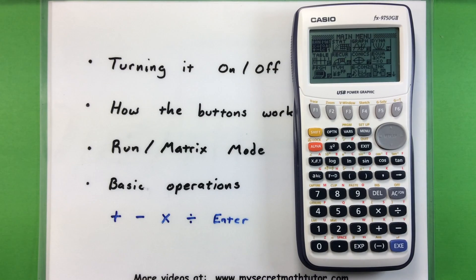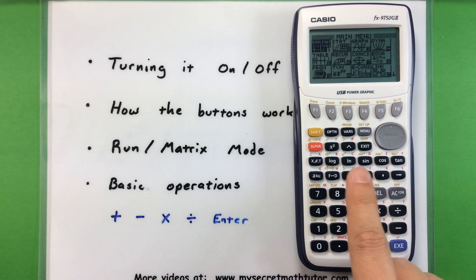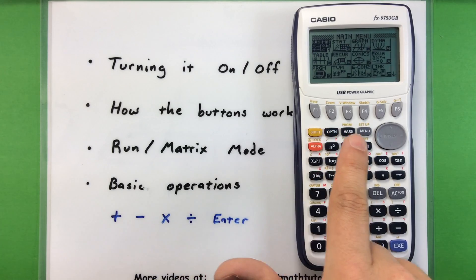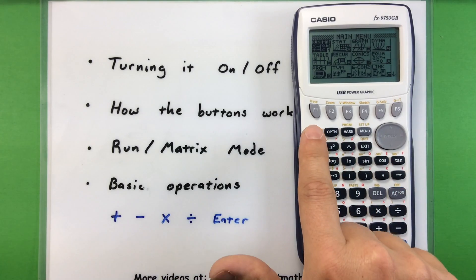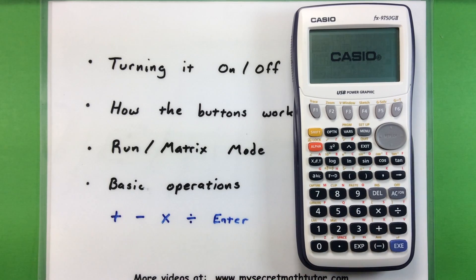Now, if you want to turn this thing off, you actually use the same button, but you have to press the shift button and then press that on button in order to turn it off. So I'm going to press shift on. And now the thing powers down and it's off.